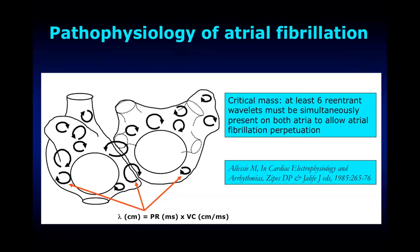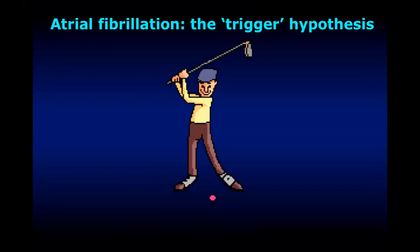Over the years, there was extensive research trying to understand the underlying mechanism and initiators of atrial fibrillation, as well as what maintains it. One important research published back in 1985 tried to understand what happens in atrial fibrillation. This breakthrough research stated that for a maintained atrial fibrillatory rhythm, there should be a critical mass of at least six re-entrant wavelets or re-entrant circuits moving around in both atria simultaneously. You need at least six re-entrant wavelets for atrial fibrillation to be maintained.